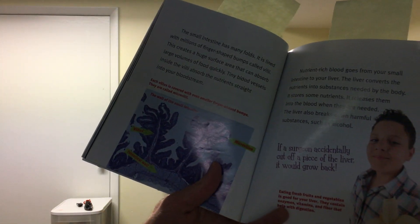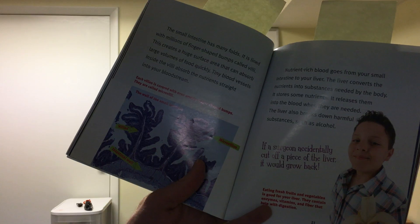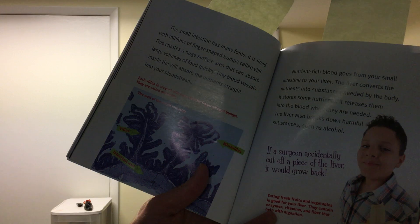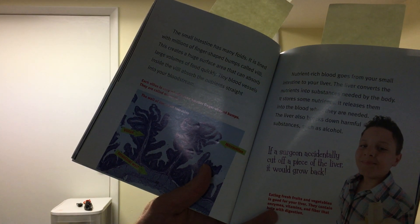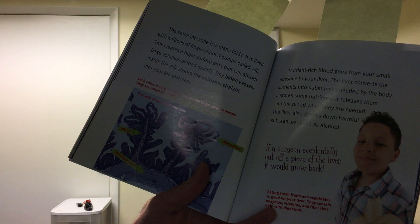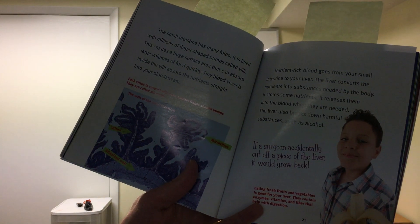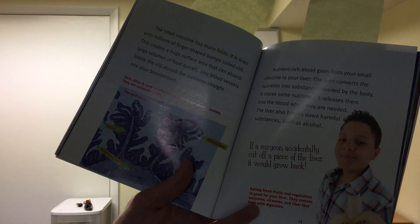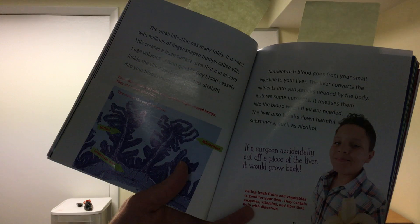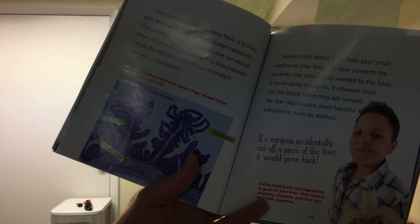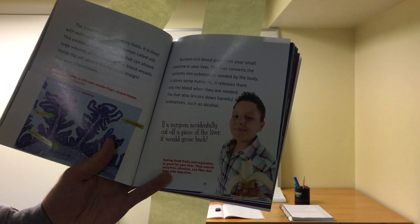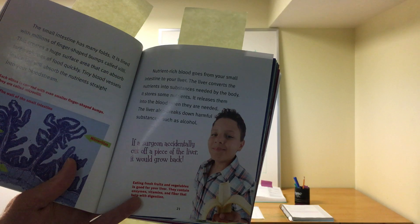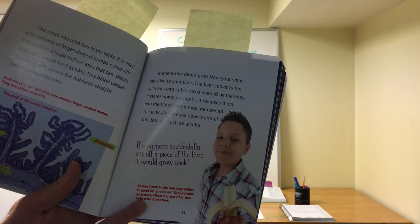The small intestine has many folds. It is lined with millions of finger-shaped bumps called villi. This creates a huge surface area that can absorb large volumes of food quickly. Tiny blood vessels inside the villi absorb the nutrients straight into your bloodstream. Nutrient-rich blood goes from your small intestine to your liver. The liver converts, that means changes over, the nutrients into substances needed by the body. It stores some nutrients. It releases them into the blood when they are needed. The liver also breaks down harmful substances such as alcohol.